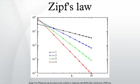However, this cannot hold exactly, because items must occur an integer number of times. There cannot be 2.5 occurrences of a word. Nevertheless, over fairly wide ranges, and to a fairly good approximation, many natural phenomena obey Zipf's law.